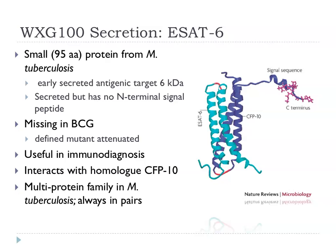For the rest of the talk I'm going to discuss the WXG100 secretion system, whose story begins with a protein called ESAT-6. This is a small protein — less than 100 amino acids — from Mycobacterium tuberculosis. ESAT-6 stands for Early Secreted Antigenic Target 6, so-called because it was found to be secreted early in culture, appearing in the supernatant, and running on a gel as if it were 6 kilodaltons, though its actual molecular weight is slightly higher.